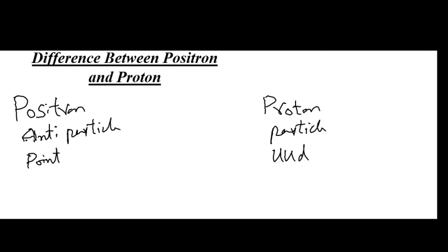The third difference is that positron belongs to the lepton family while proton belongs to the baryon family.